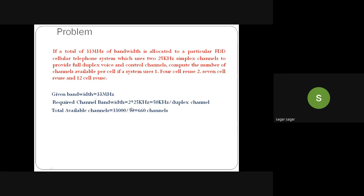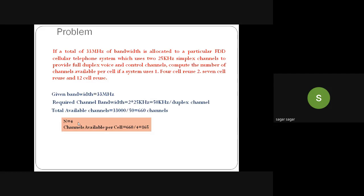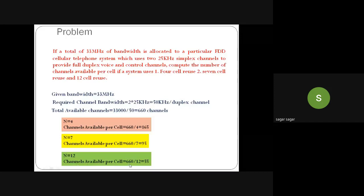With 660 total channels, compute the number of channels available per cell for different reuse patterns. For 4-cell reuse (N = 4): 660 ÷ 4 = 165 channels per cell. For 7-cell reuse (N = 7): 660 ÷ 7 ≈ 94 channels per cell (nearest integer). For 12-cell reuse (N = 12): 660 ÷ 12 = 55 channels per cell.